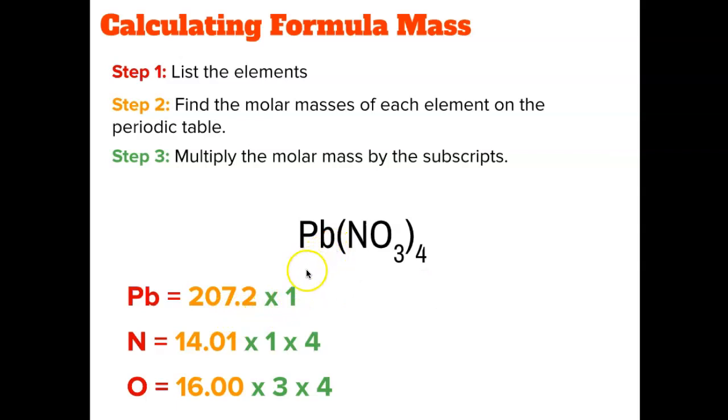Lead we're going to multiply by 1. Nitrogen, I'm going to multiply it by 1 and 4. So 1 and then this 4 applies to everything inside of the parentheses. I'm going to take 1 nitrogen times the 4 on the parentheses. For my oxygen, I have a subscript of 3 directly by the oxygen as well as the 4 which applies on the outside. We distribute that 4 throughout.